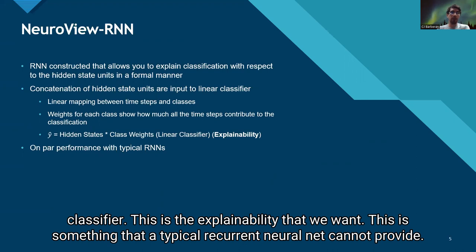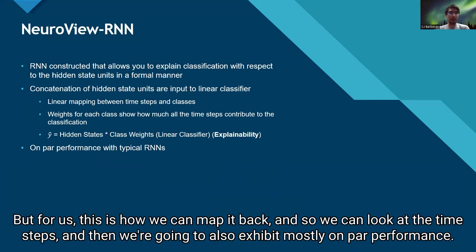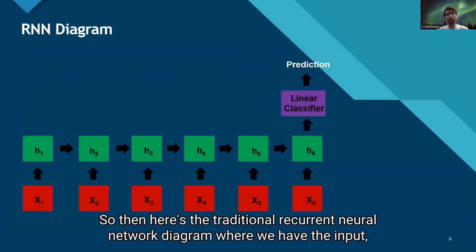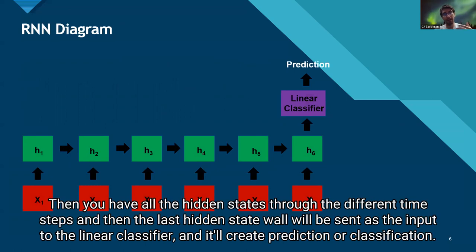This is something that a typical recurrent neural net cannot provide. But with NeuroView, we can map it back and look at the time steps, and we also exhibit mostly on-par performance. In the traditional recurrent neural network diagram, you have the input, then all the hidden states through different time steps, and then the last hidden state is sent as input to the linear classifier to create the prediction or classification.